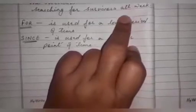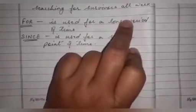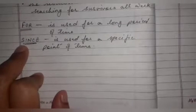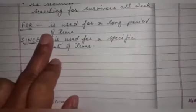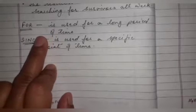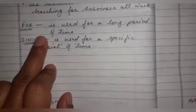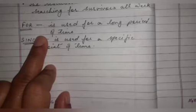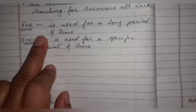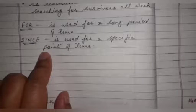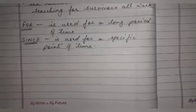Now the question arises: where do we use 'for' and where do we use 'since'? 'For' is used for a long period of time — when you have a length of time, an ample amount of time. 'Since' is used for a specific point of time. Now let us discuss the exercises of the chapter.